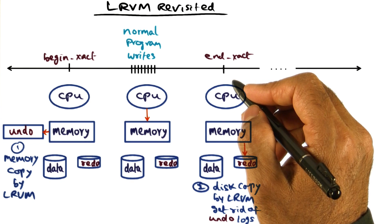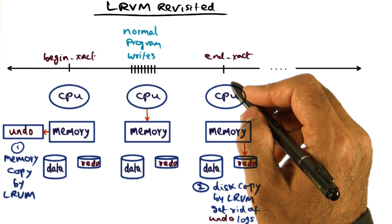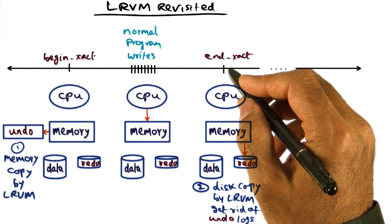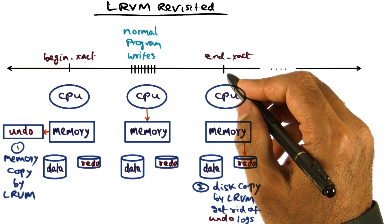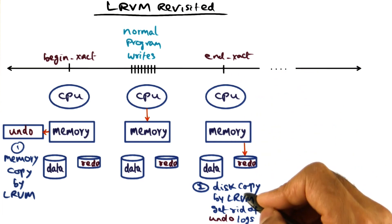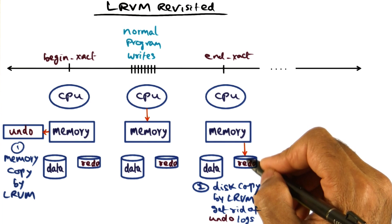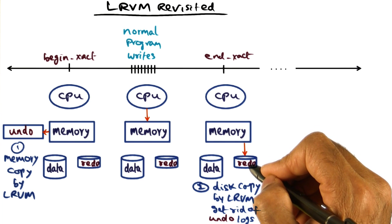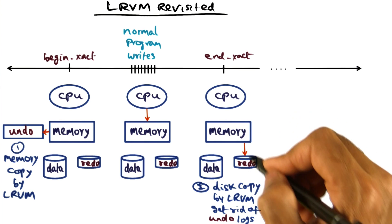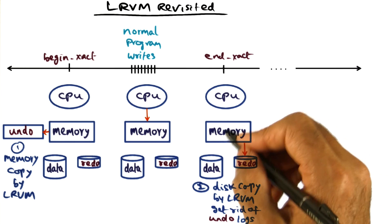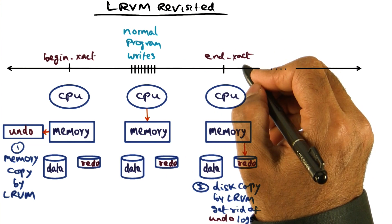So on the other hand, if you're conservative, then what you would do is you let the end transaction have the normal transactional semantic, which is to say that at end transaction force the write of the log into the disk to ensure that the log segment has been committed to the disk and only then allow the application to proceed further.